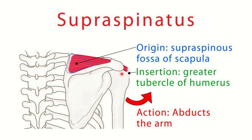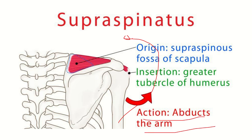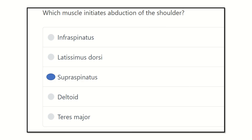During abduction, the humerus moves in this direction. The supraspinatus muscle initiates this movement, and mid deltoid is also responsible for abduction of the shoulder, but abduction is initiated by the supraspinatus muscle. So our final answer is supraspinatus — it initiates abduction of the shoulder.